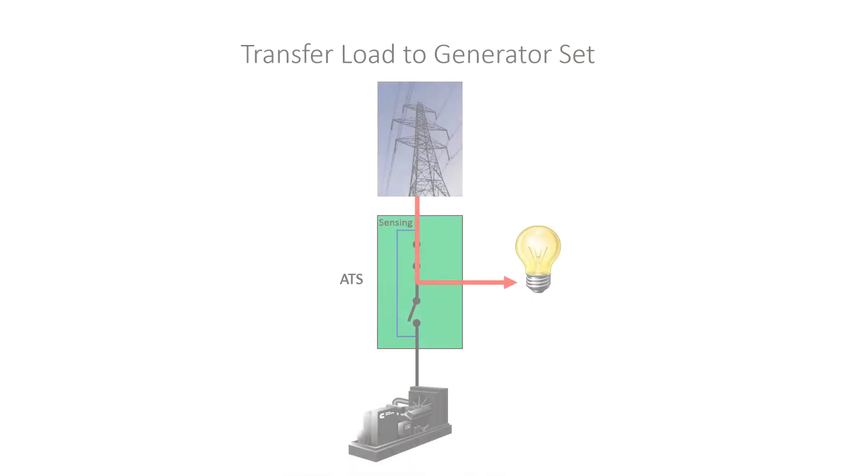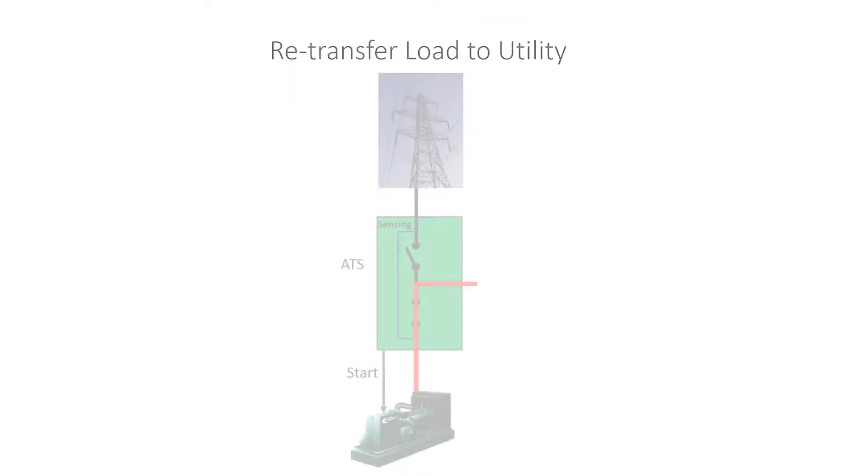When the ATS control senses that the voltage and or frequency of the utility are not within the acceptable limits, it sends a start signal to the generator. When the generator set is ready to accept load, the ATS transfers the load to the generator. Once the utility source returns and becomes stable again, the ATS automatically transfers the load back to the utility and removes the start signal from the generator to allow it to shut down.